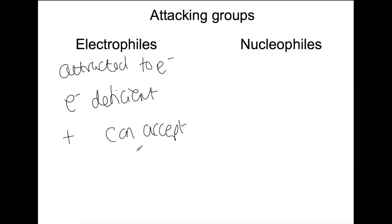If you're doing synthetic chemistry, we often have attacking groups that are trying to attack a certain molecule, and they fall into two types. We have electrophiles and we have nucleophiles. So electrophiles are electron loving, and they are attracted to electrons. They tend to be electron deficient themselves, hence they want to try and get to the electrons. And they're often positively charged and can accept electron pairs.